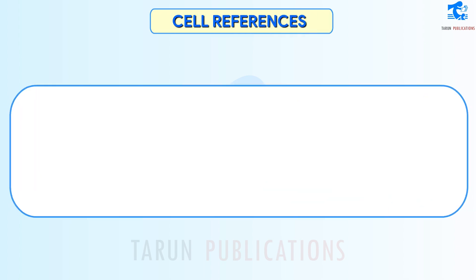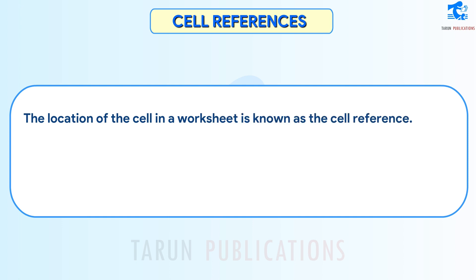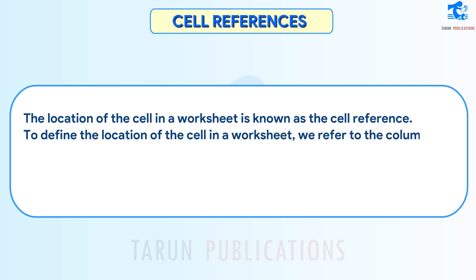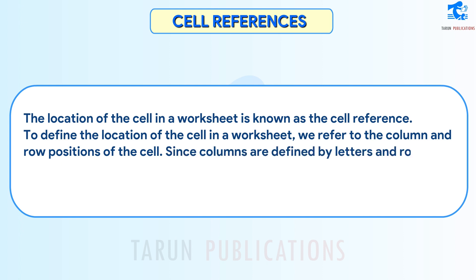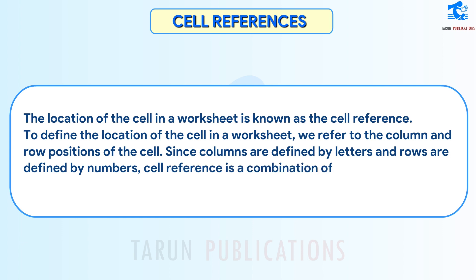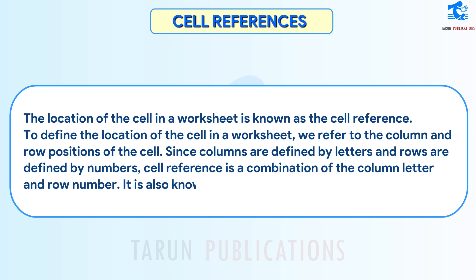Cell References. The location of the cell in a worksheet is known as the cell reference. To define the location of the cell in a worksheet, we refer to the column and row positions of the cell. Since columns are defined by letters and rows are defined by numbers, the cell reference is a combination of the column letter and row number. It is also known as the cell address. It is unique to each cell.